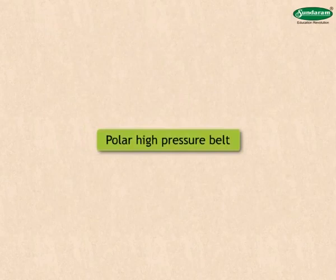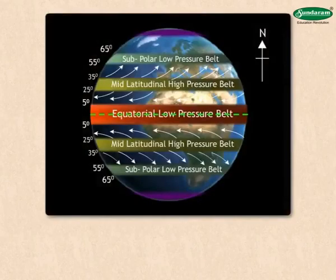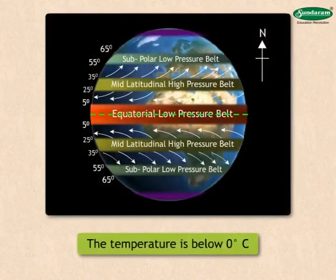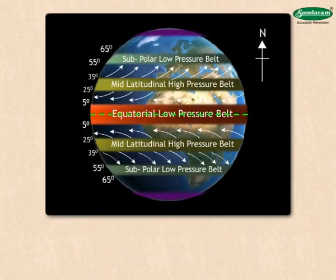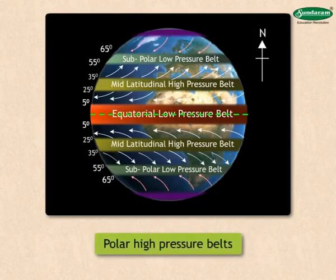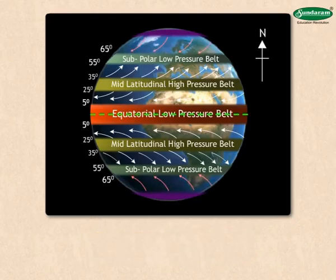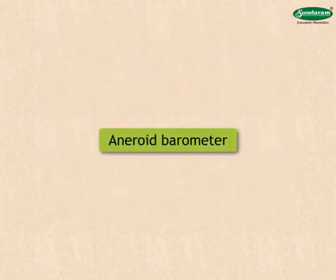Polar high pressure belt. On both the poles, the temperature is below 0 degrees Celsius throughout the year. As a result, high pressure belts are formed near the surface in the polar regions. They are called polar high pressure belts. Air pressure belts move approximately 5 degree to 7 degree north or south according to the seasons.